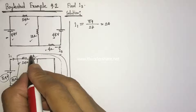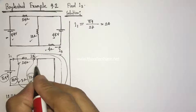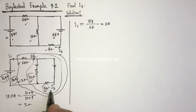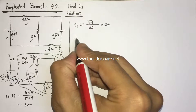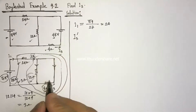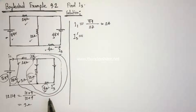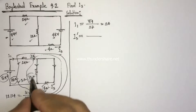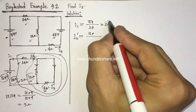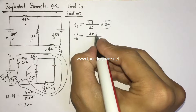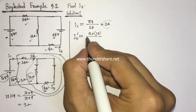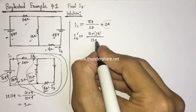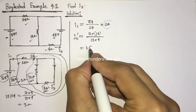This 2-ampere current will divide into two paths and the direction of current flow will be downward. So I3 prime will be identified using the current divider rule. I3 prime equals 12 ohms multiplied by the total current of 2 amperes, divided by the total resistance of 12 ohms plus 4 ohms, which equals 1.5 amperes.